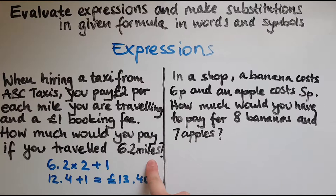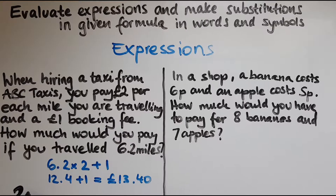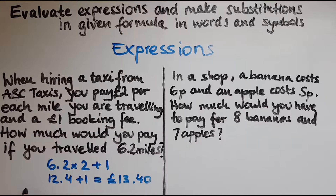But what would this look like if we had it in symbols? We'd write two pounds per each mile as two times m, but a shorter way to write it is just 2m, because in maths when you have multiplication with letters and numbers mixed together, you don't need to write the multiplication symbol as it can be confusing because it looks like an x.